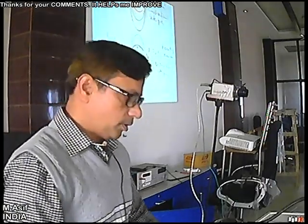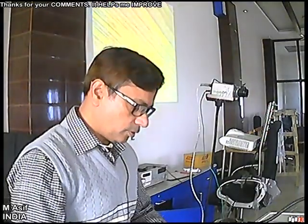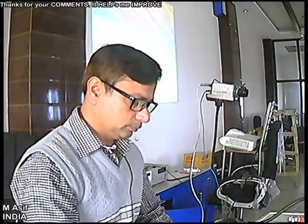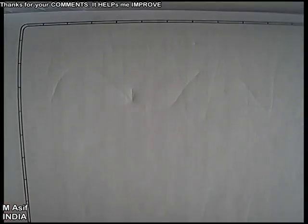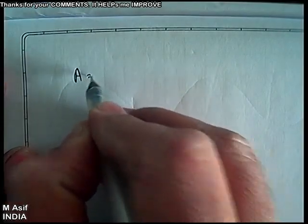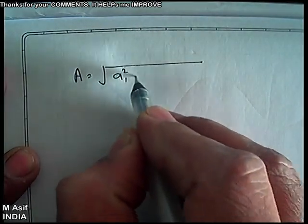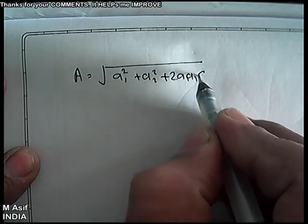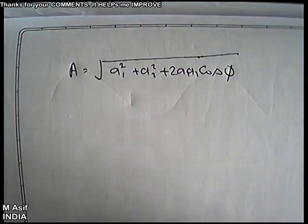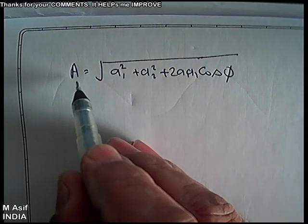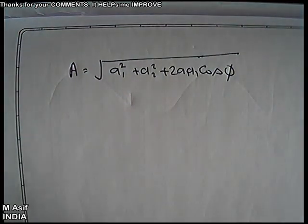Mathematical analysis of formation of maxima and minima. We found the resultant amplitude of the resultant wave: A equals the square root of a1 squared plus a2 squared plus twice a1 a2 cos φ. From this formula it is clear that the resultant wave's amplitude depends on the phase difference φ.